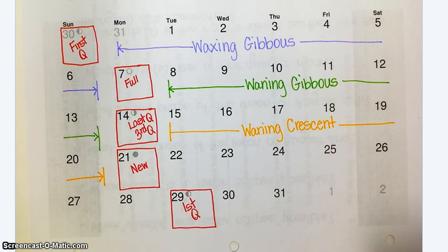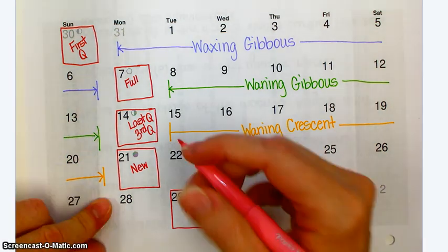The 21st is a new moon. What about the 22nd, 23rd, 24th, et cetera? It's going to be a waxing crescent. Very good.